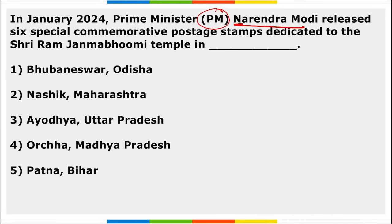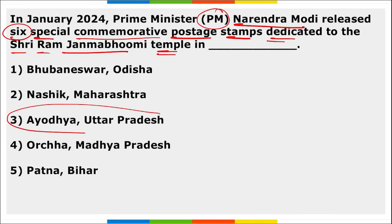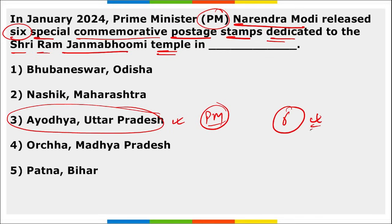PM Narendra Modi released six special commemorative postage stamps dedicated to the Shri Ram Janambhoomi temple in Ayodhya. The commemorative collection comprises six different stamps.